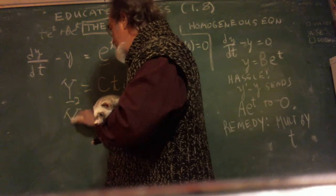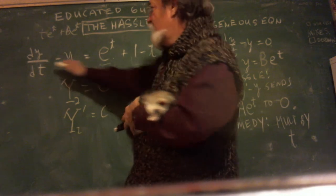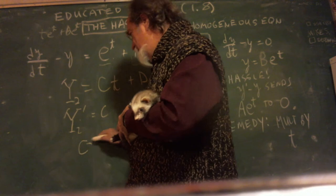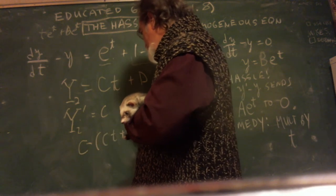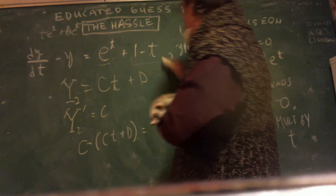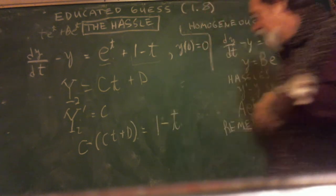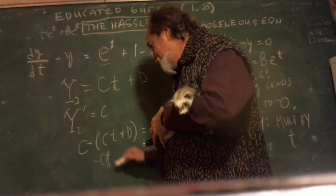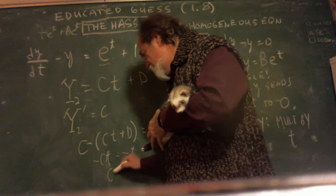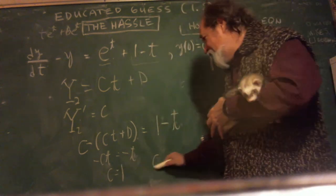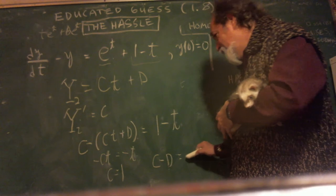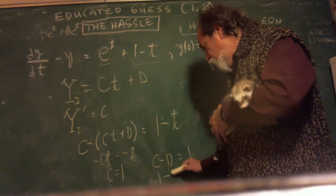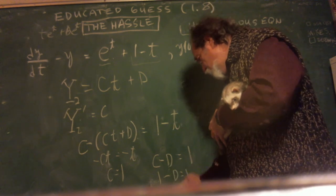Take a derivative. Big y sub two prime is just c. The differential equation says I have to do the derivative minus the original. So it's c minus c·t plus d. And that's supposed to come out to be equal to 1 minus t. So I can see right now, I've got a minus c·t, and that's supposed to be equal to minus t. So c equals one. And then I have c minus d equals one, because those are the constants. And they have to give me a one. And c is a one. One minus d equals one. d equals zero.